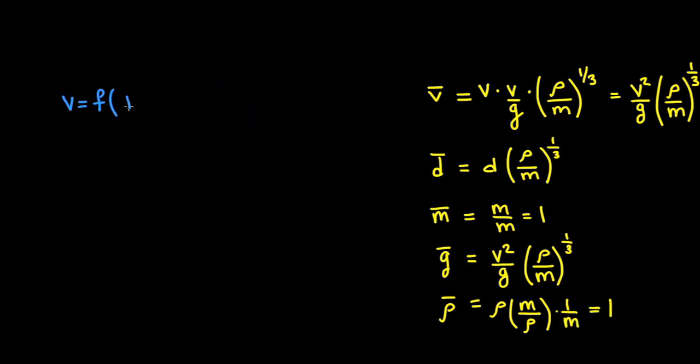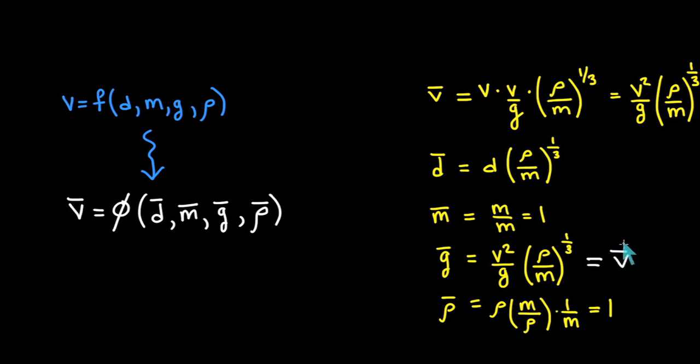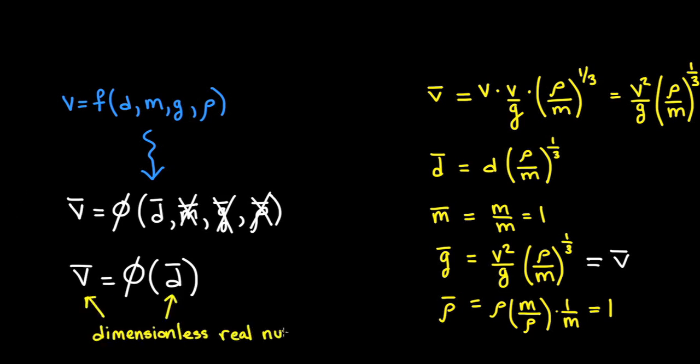Now we can rewrite the equation for velocity in terms of the new dimensionless variables. It is a new function because the variables have been modified. Notice that v bar is equal to g bar. This means that v bar and g bar are not independent. So our function for v bar cannot depend on g bar. Also notice that m bar and rho bar are both equal to 1, so our function doesn't depend on them either. This has simplified our relationship. V bar is a function of only one variable, d bar. And remember that d bar is dimensionless, so it's just a real number. This means that phi can be any function.